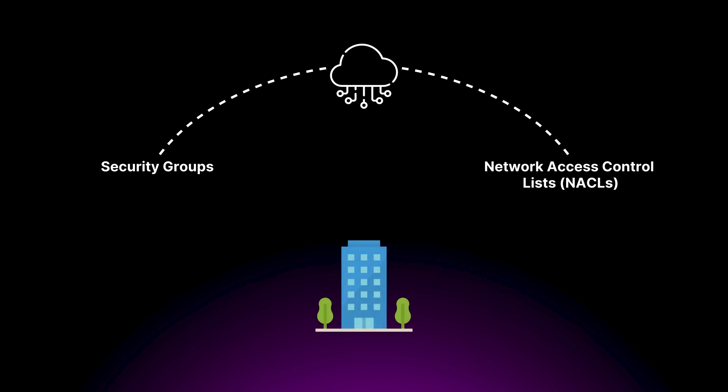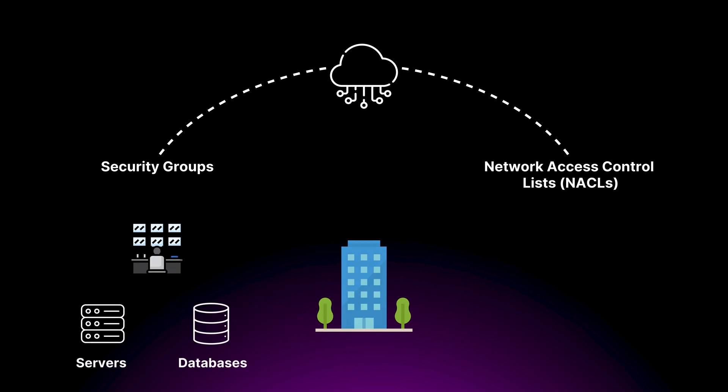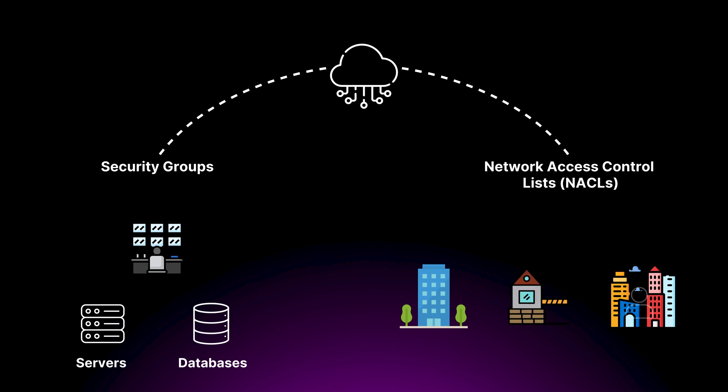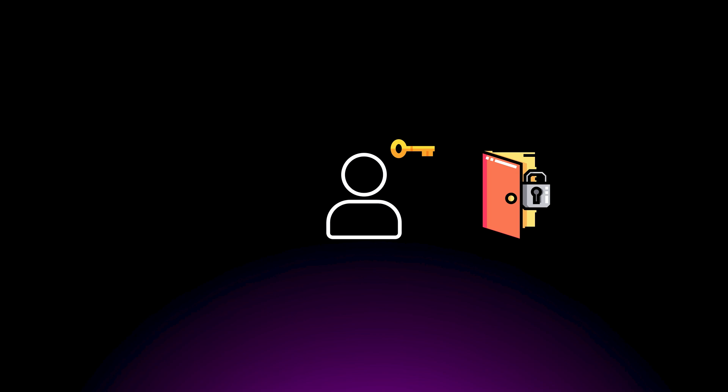This is like having different security measures for each district in your city — your downtown area might have surveillance cameras and regular police patrols, whilst your residential area has neighborhood watch programs and gated access. In the cloud, these security controls are implemented through security groups and network access control lists. Security groups control which traffic can enter and exit each resource such as your servers and databases, whilst network access control lists control traffic between subnets — between your residential area and your downtown.